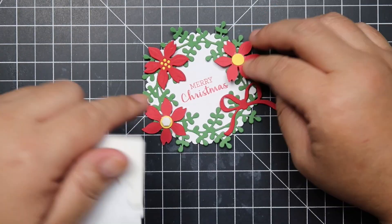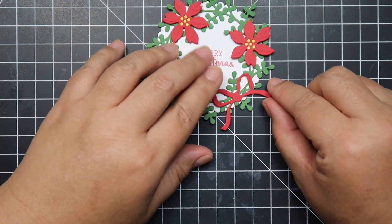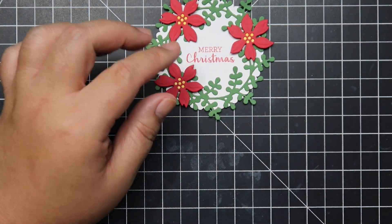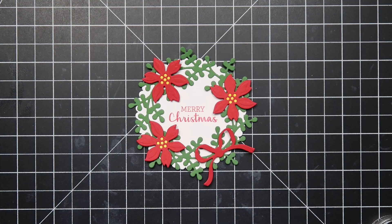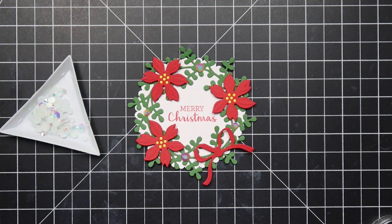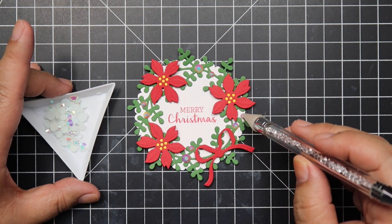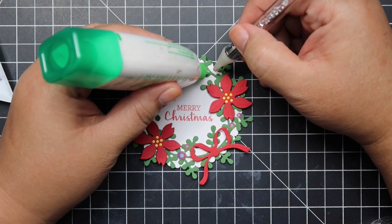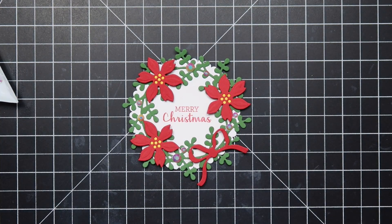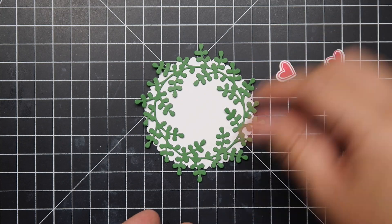I die cut the poinsettias with Real Red and then I die cut a yellow circle with Pineapple Punch. You can use any red color you have, any yellow cardstock you have. Then I took some of my Pink Fresh Studio jewels and these are iridescent, and I'm just decorating the whole wreath with it and that finishes up the first tag.